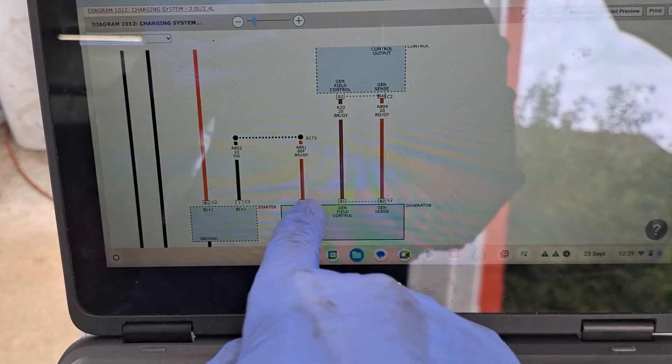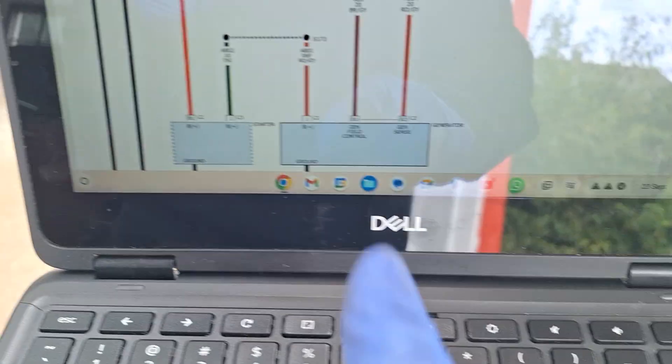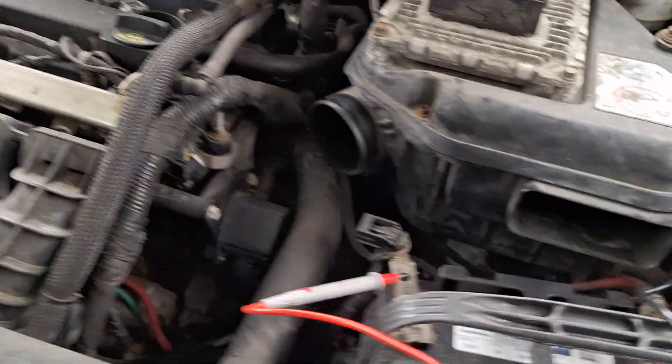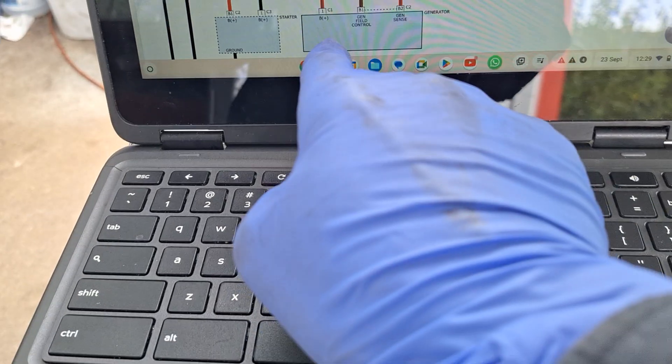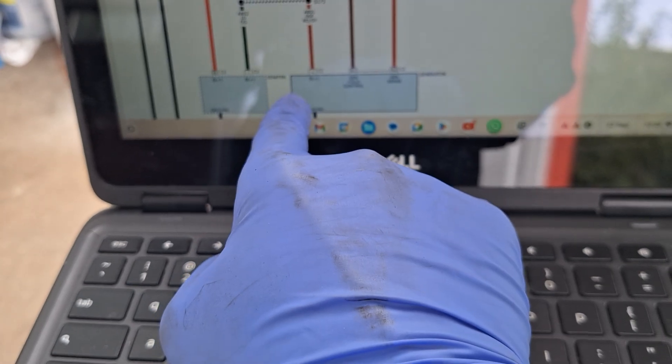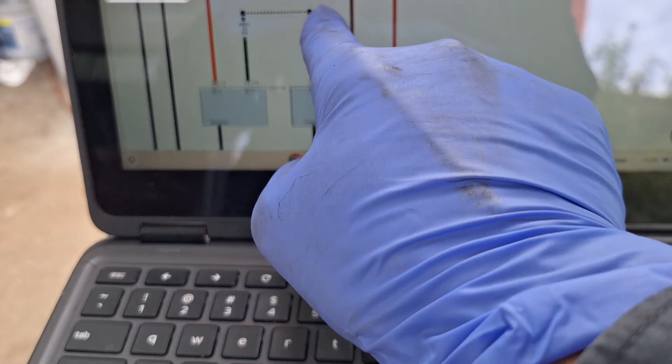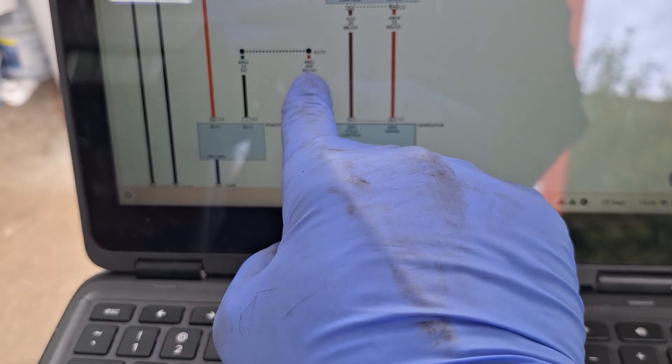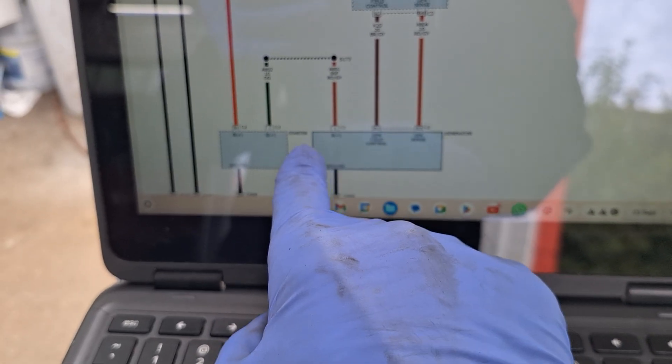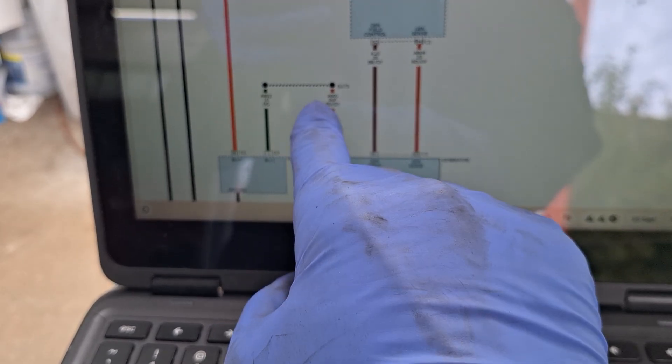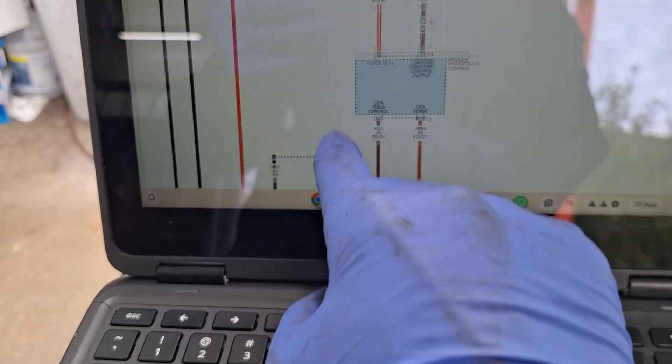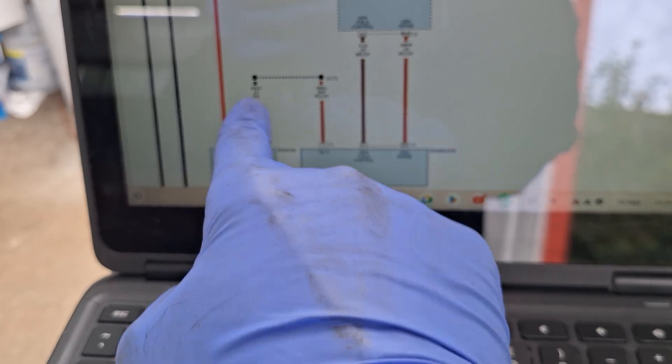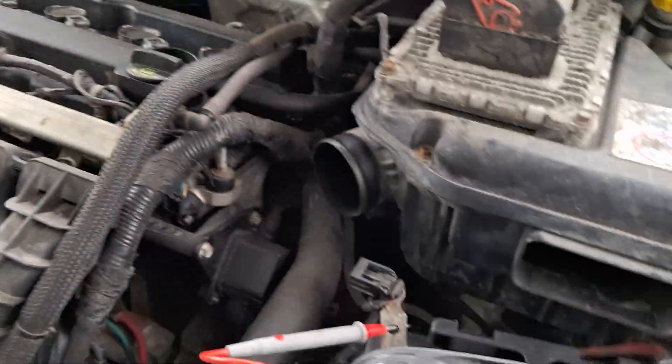So we have to take the air cleaner box out and let's do a voltage drop test. Let's see, this is the connector.